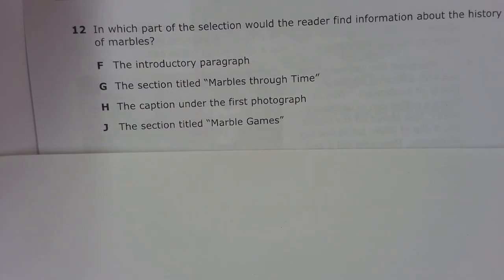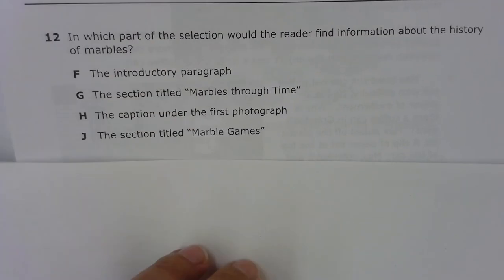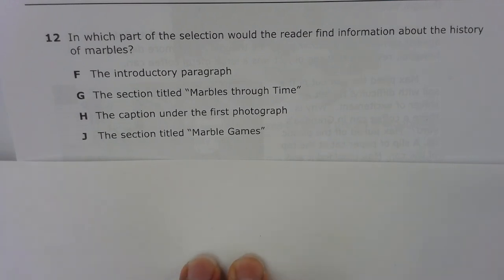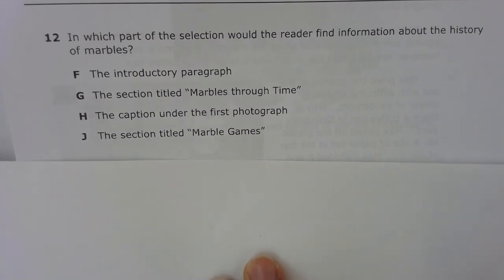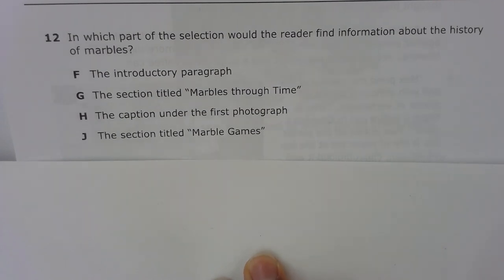Number 12. In which part of the selection would the reader find information about the history of marbles? F. The introductory paragraph. G. The section titled Marbles Through Time. H. The caption under the first photograph. J. The section titled Marble Games.